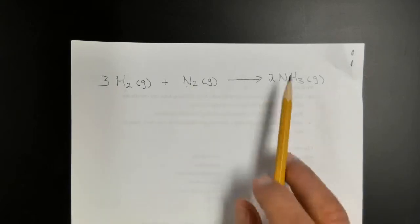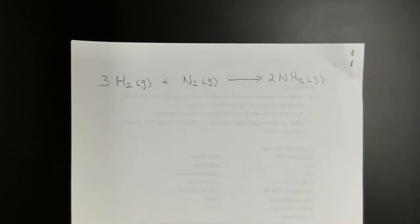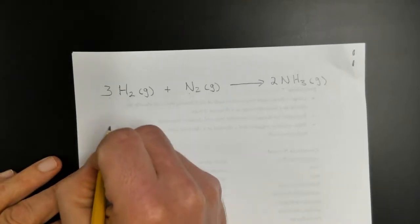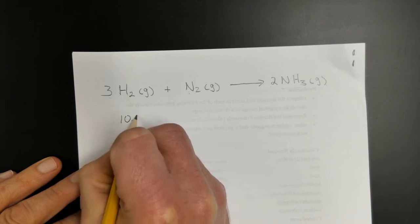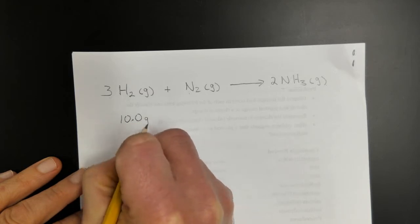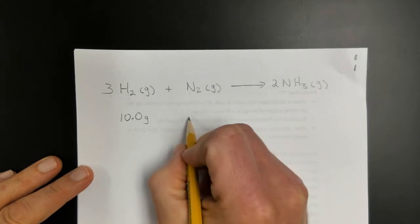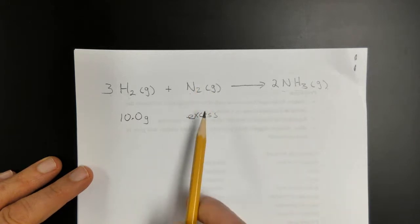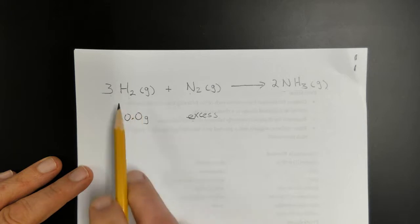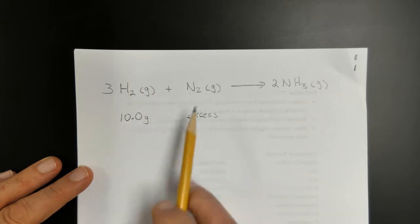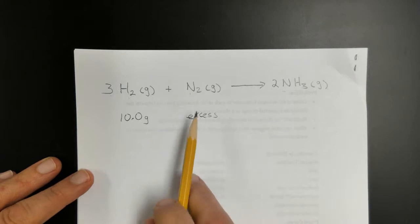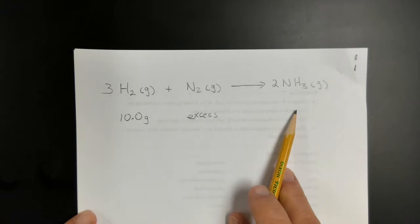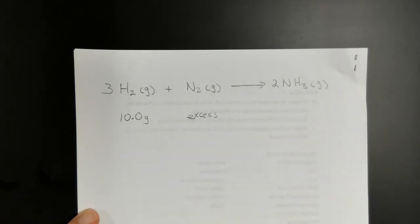Here's the question: suppose we start with 10.0 grams of H₂. Let's assume nitrogen is in excess — we have plenty of nitrogen to react with all the hydrogen. The reaction proceeds, the hydrogen runs out first, and we have plenty of nitrogen left over. That means how much ammonia we can make depends solely on how much hydrogen we start with. Nitrogen is always in excess here.